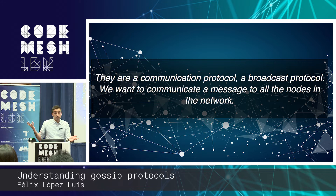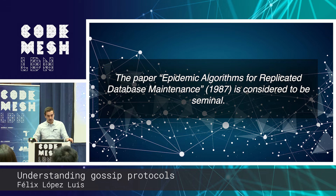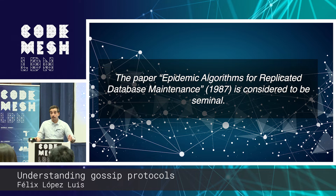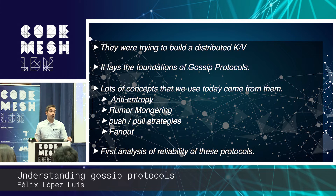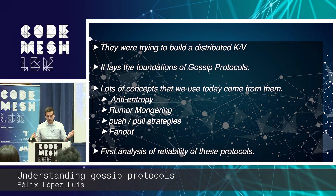Gossip protocols are essentially broadcast protocols — we want to send messages to all nodes in the system. The main motivation is to trade the strong reliability guarantees of deterministic approaches for weaker reliability guarantees but with really good scalability properties. It's believed the first use was in 1987, in the paper 'Epidemic Algorithms for Replicated Database Maintenance.' They were building a distributed key-value store in 1987, and the paper is really worth reading. It lays the foundations of Gossip protocols, introducing concepts still used today like anti-entropy, rumor-mongering, and fanout.